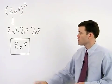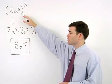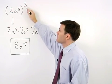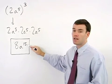Now let's take a look at the relationship between our answer and the original problem. Notice that we simply multiply the exponents together, 5 times 3 to get 15.